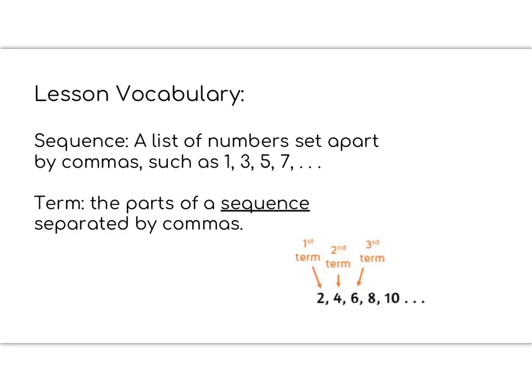Today's lesson has two vocabulary words: sequence and term. Remember that these need to be written in your math notebook so that you can use your notes on the test. When we talk about numerical patterns, we call the list of numbers a sequence. So a sequence is a list of numbers set apart by commas, such as 1, 2, 5, 7. The whole list together is called a sequence.